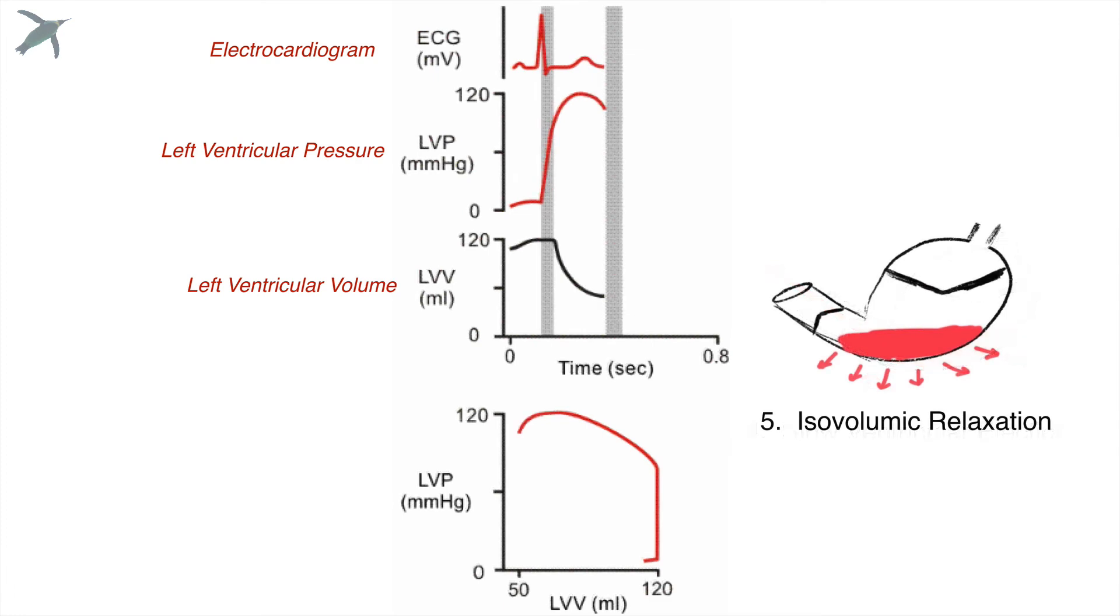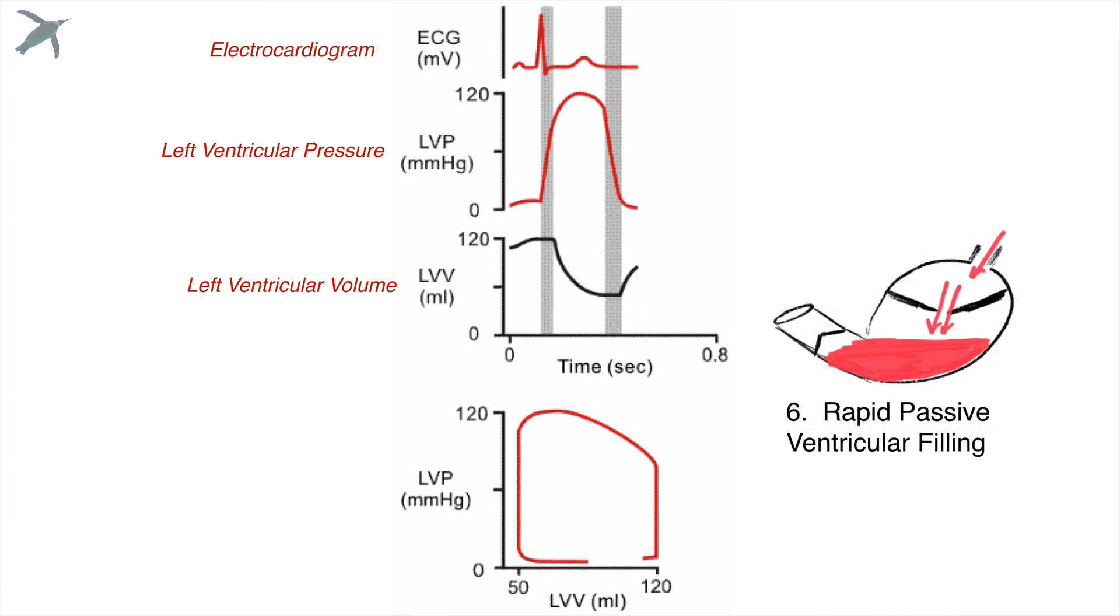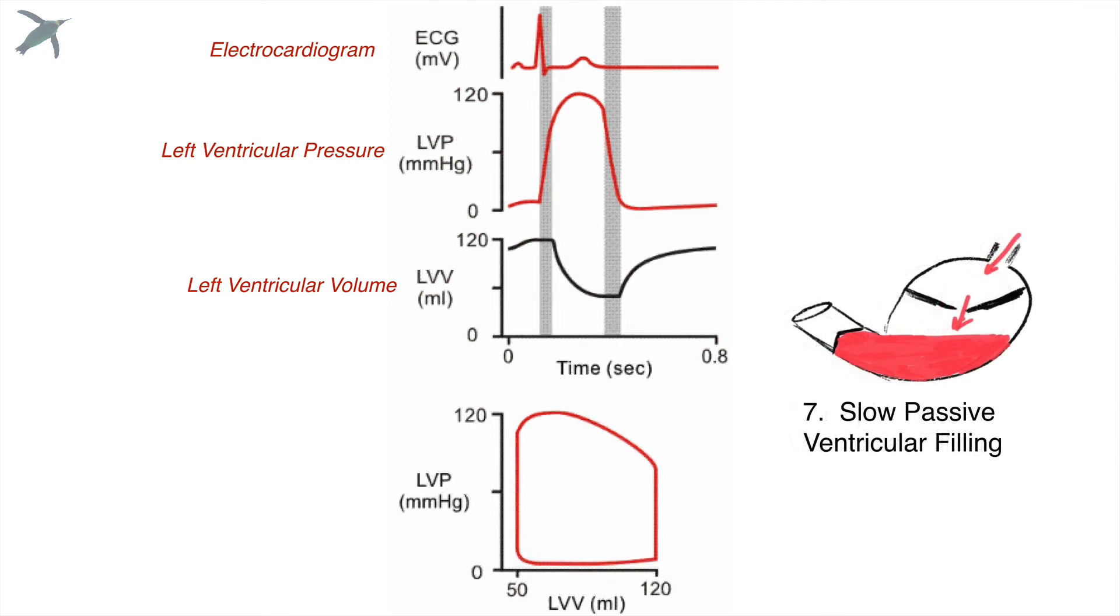Now we round the corner and start our relaxation. You will notice that the left ventricular pressure is falling, but the left ventricular volume is staying the same. It's isovolumic. And finally, we've got to fill that ventricle. The filling is rapid because the pressure gradient is high. But as the ventricle continues to fill, the rate at which it fills slows down. So we call it slow passive ventricular filling.